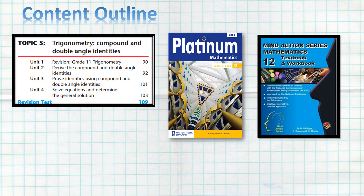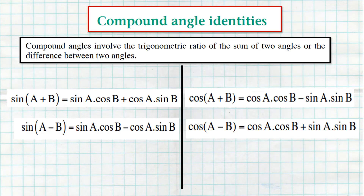Looking at the content outline: in Part 1 we covered Grade 11 trigonometry and some Grade 10. This is Unit 2, and I want us to focus really on compound angle identities in this session. Double angle identities will be done in Part 3. We are still using the Platinum Mathematics learner's book and Mind Action Series Mathematics textbook and workbook.